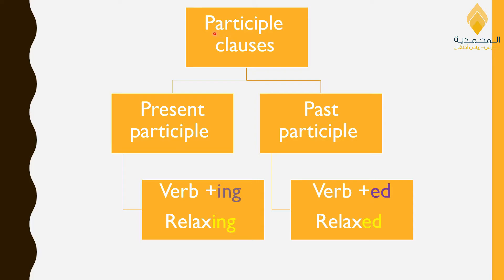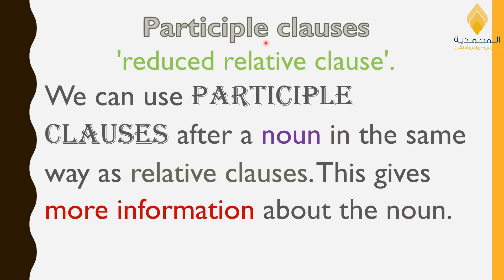When I'm talking about participle clauses, that means the clause is going to start either with a present participle or with a past participle. The present participle form is the verb plus -ing. For example, 'relaxing' — the verb is 'relax' and we add -ing. The past participle is when we add -ed to the verb, so 'relaxed'. Participle clauses are sometimes also called reduced relative clauses, and they usually add more information.